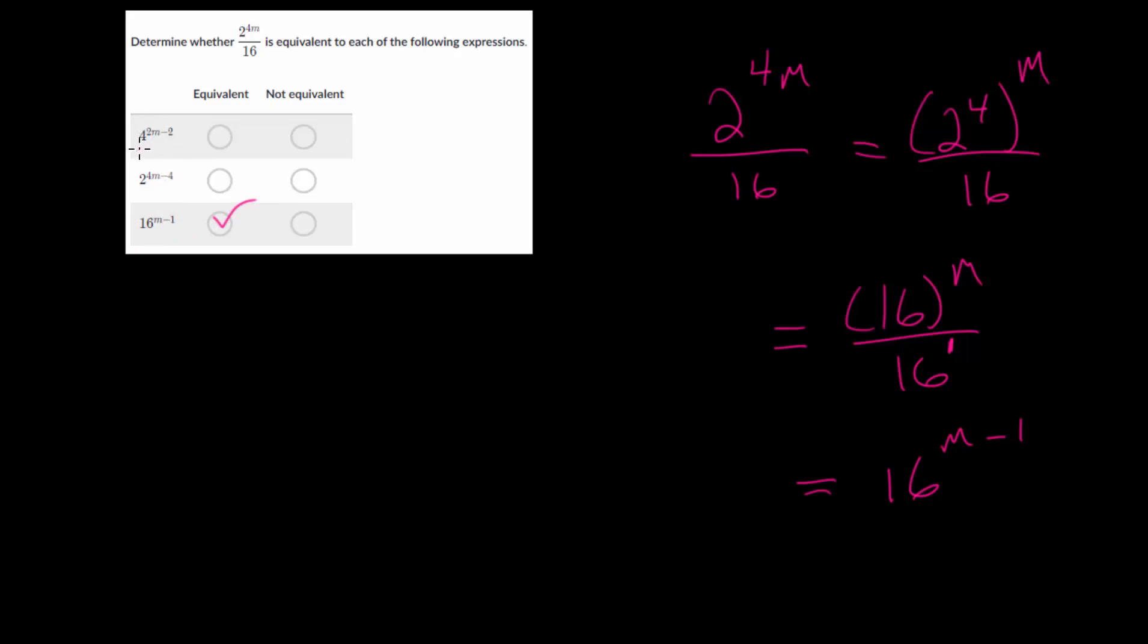Now the other two have different bases. They have a base of 4 and a base of 2. So let's rewrite 16 now. Let's do that over here. So 16 to the m minus 1. Well, 16 is really just 4 squared.